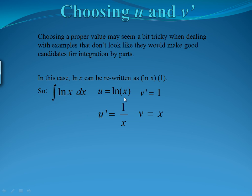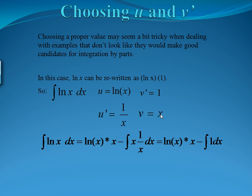So here, my u is ln(x) and my v' is just 1, which means my u' is 1/x — the derivative of ln(x) — and my v, the antiderivative of 1, is just x. So I can now write my integral as u times v, so ln(x)·x, minus the integral of u'·v, which is (1/x)·x dx. The x and 1/x cancel to just be 1. So we have ln(x)·x minus the integral of 1 dx. The antiderivative of 1 is x, giving us ln(x)·x minus x, plus C.